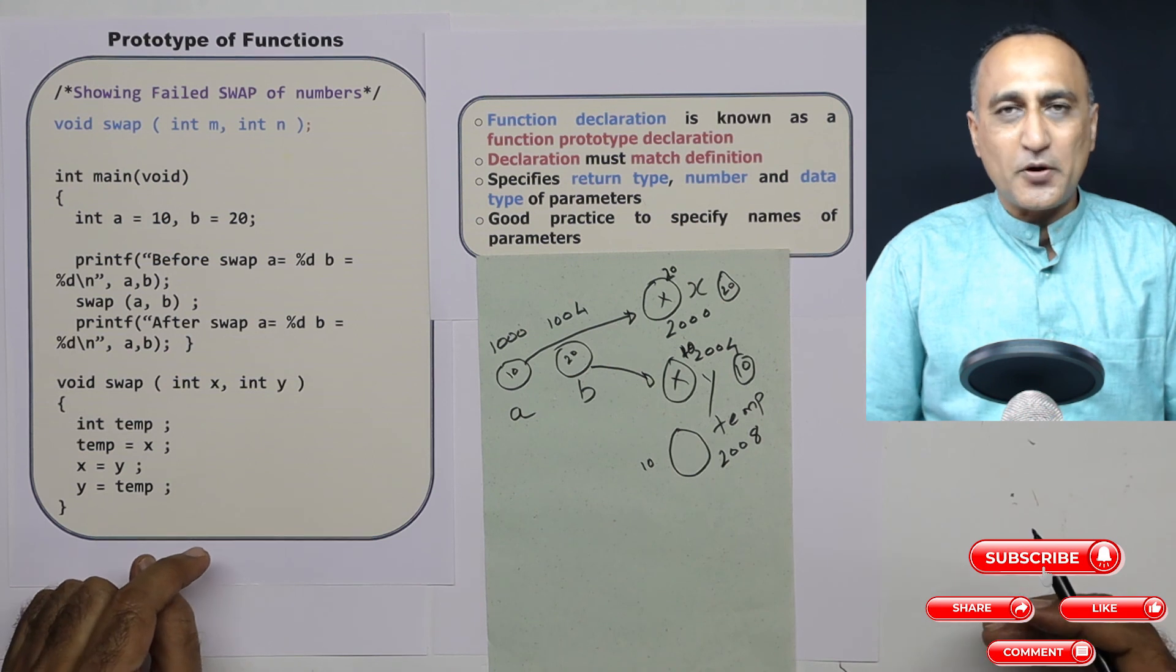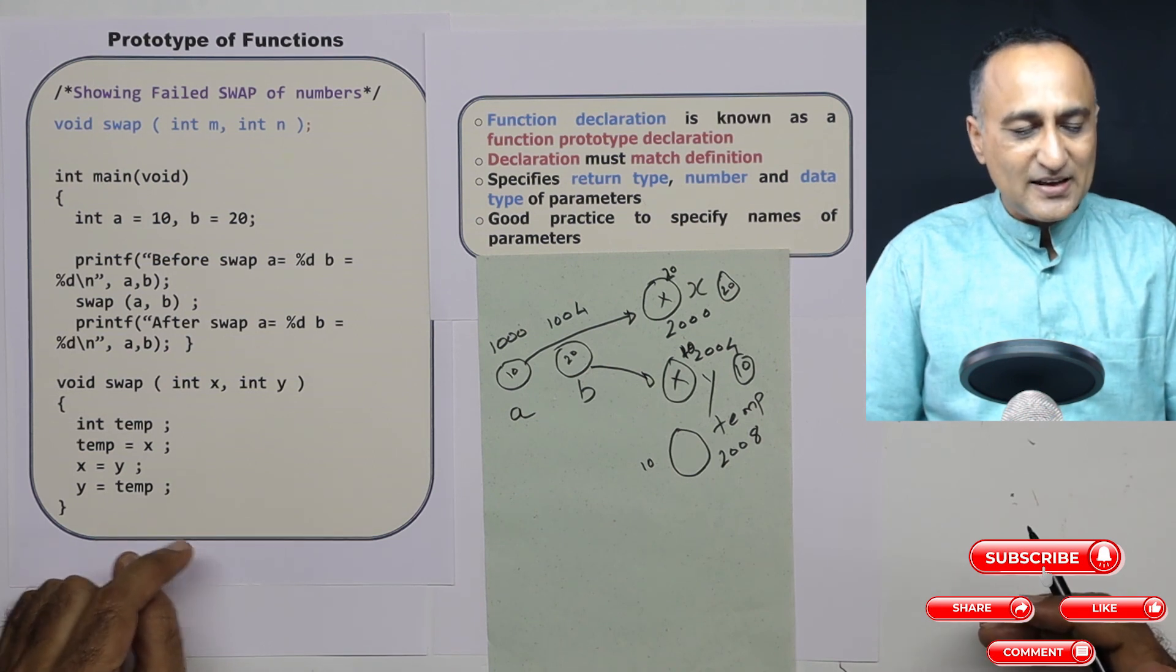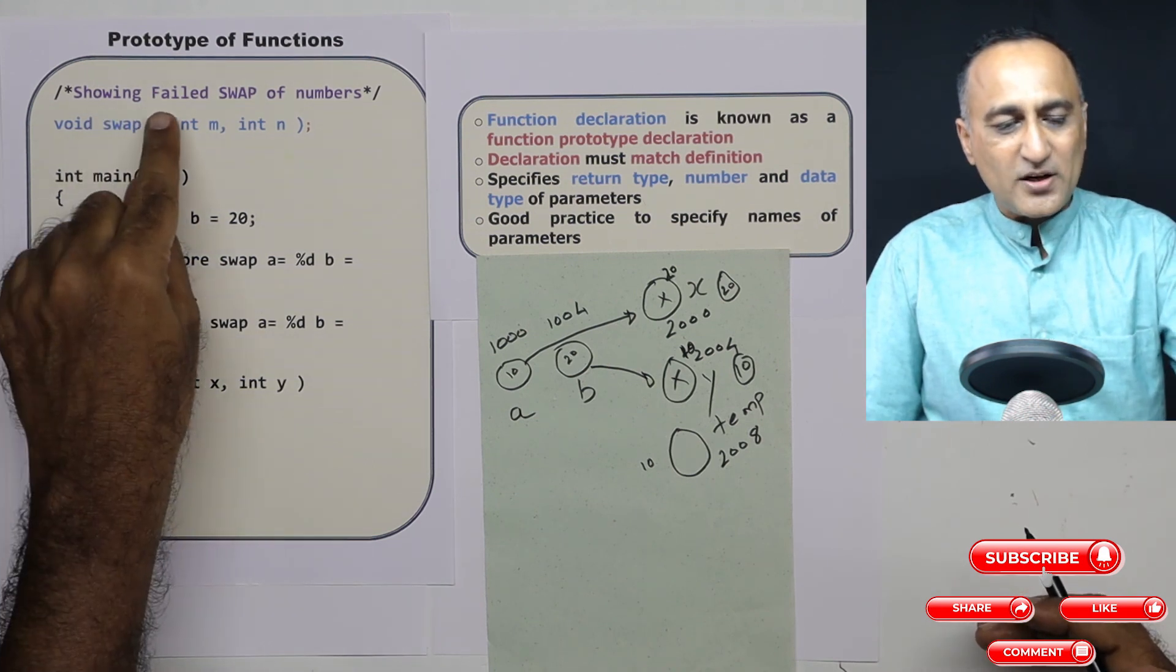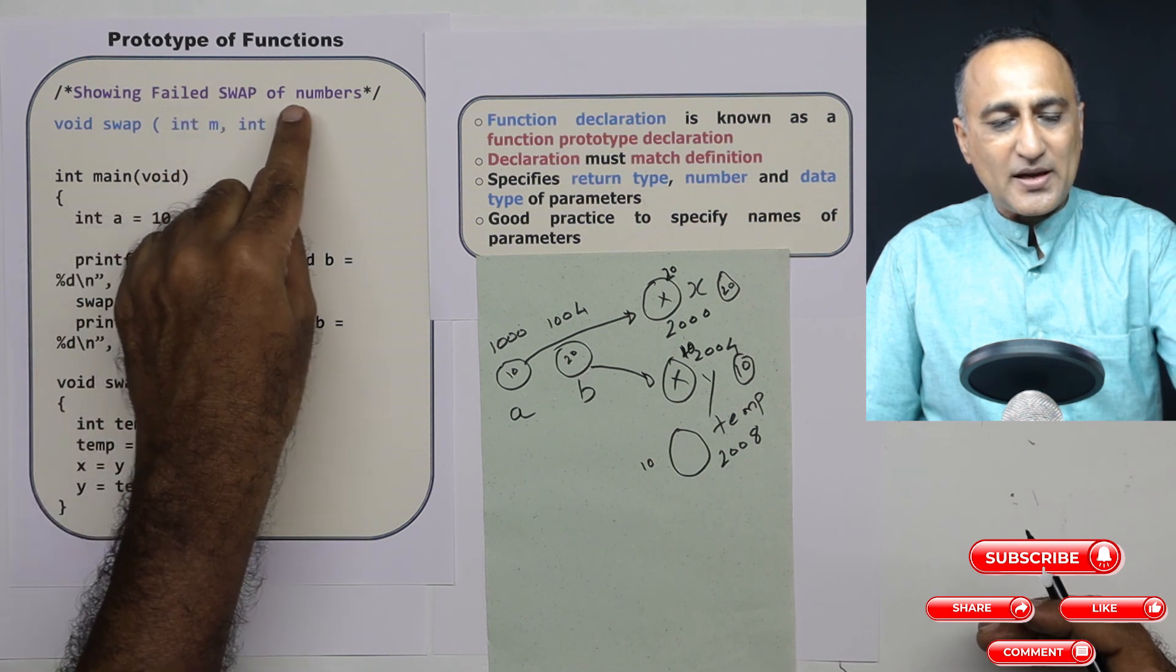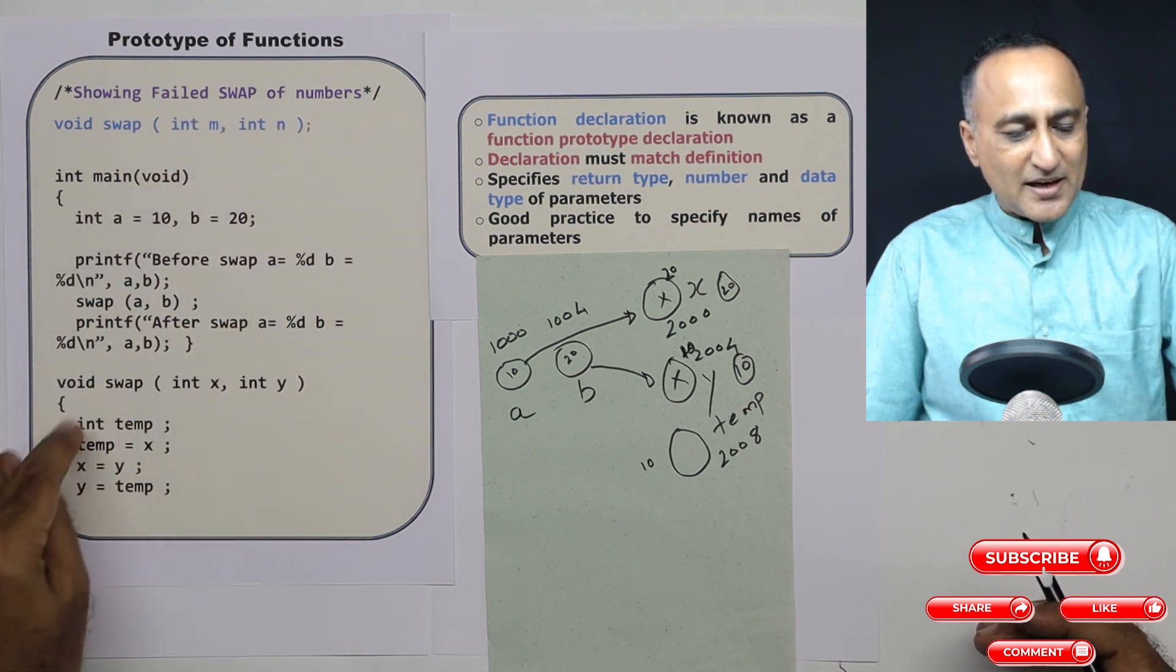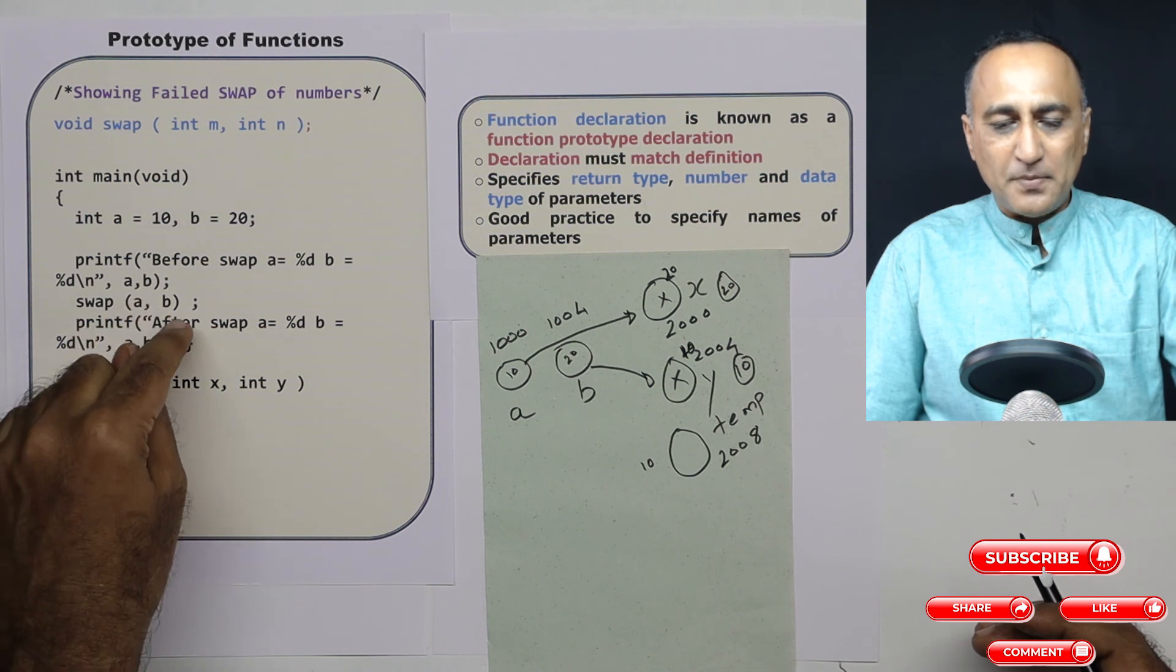In the subsequent section in pointers, we will be discussing that right now. That's the reason I call it a failed swap or exchange of numbers because the exchange happens here but does not get affected in the main.